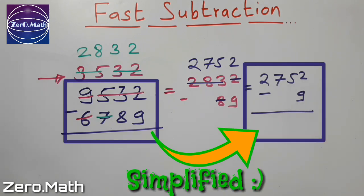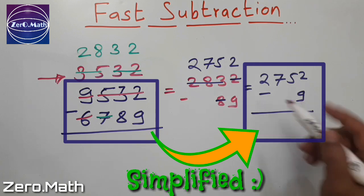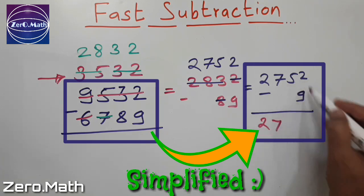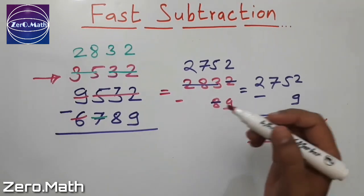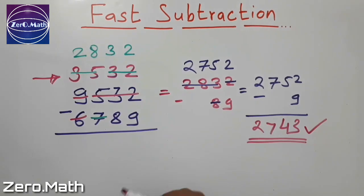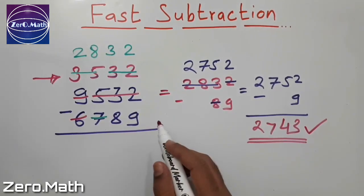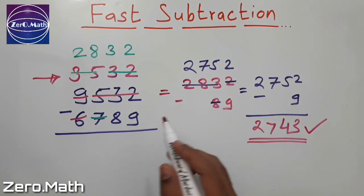I can write down this answer very easily. 2752 minus 9 is 27, and 52 minus 9 is 43, which is my answer. Friends, you can see how easily you can perform such kind of complicated subtraction without even taking a borrow.